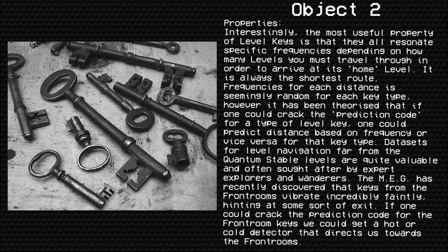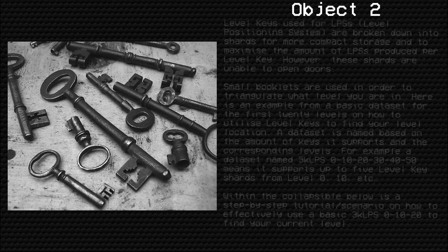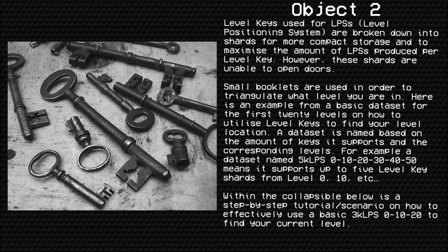Data sets for level navigation far from the quantum stable levels are quite valuable and sought after by expert explorers and wanderers. The MEG has recently discovered that keys from the front rooms vibrate incredibly faintly, hinting at some sort of exit. If one could crack the prediction code for front room keys, we could get a hot-or-cold detector that directs us towards the front rooms. Level keys used for LPS — the Level Positioning System — are broken down into shards for more compact storage and to maximize the amount of LPS units produced per key.